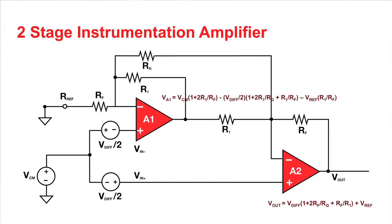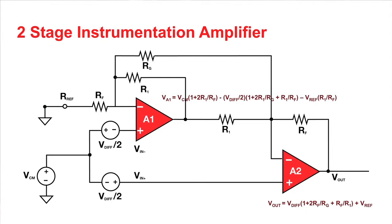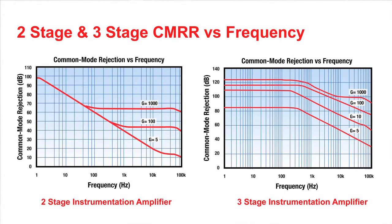For two-stage instrumentation amplifiers, the input impedance is still high due to the non-inverting op amps on the input stage, but unlike the three-stage instrumentation amplifier, the signal must travel through amplifier A1 before it's subtracted from VIN2 by amplifier A2. Thus, the voltage at the output of A1 is slightly phase shifted with respect to VIN1. The phase shifted topology affects the CMRR at high frequency. In general, two op amp INAs are used over much lower frequencies where this does not become an issue.